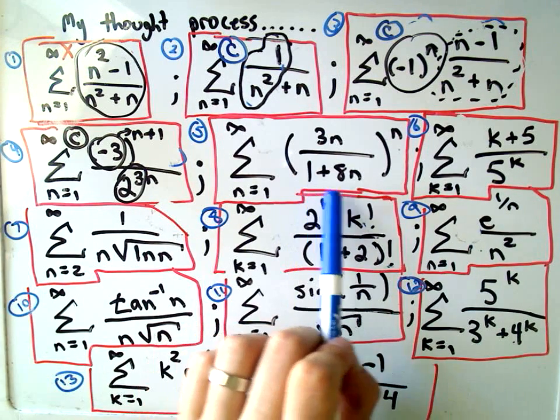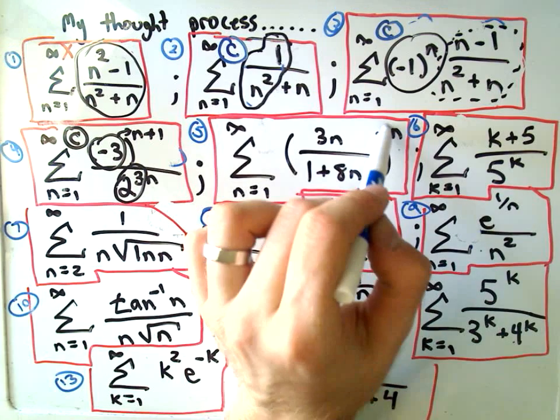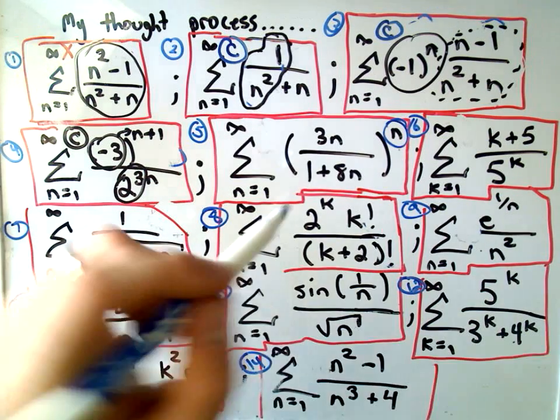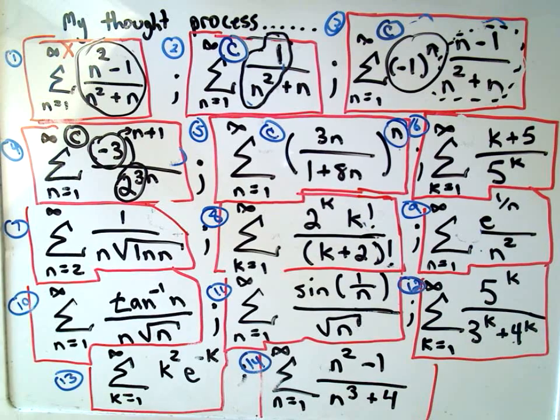Number five, 3 to the n over 1 plus 8n, all of that raised to the n power. The fact that there's this exponent of n out here makes me think to use the root test. Again, if you use the root test, it's going to get rid of that nth power. And then you're just taking a limit. The limit of what's left over should be 3 eighths, which is smaller than 1, which according to the root test means it converges.